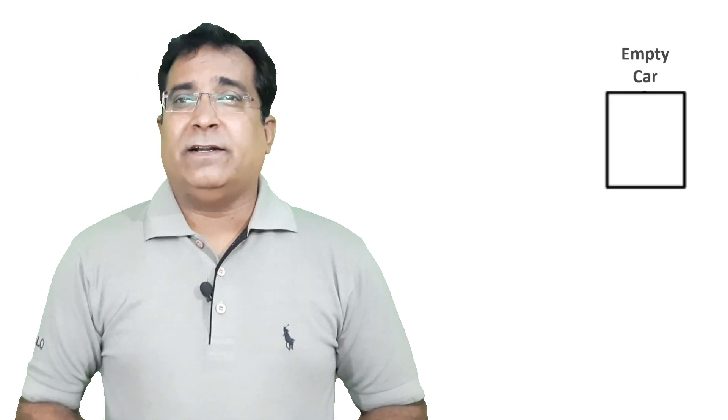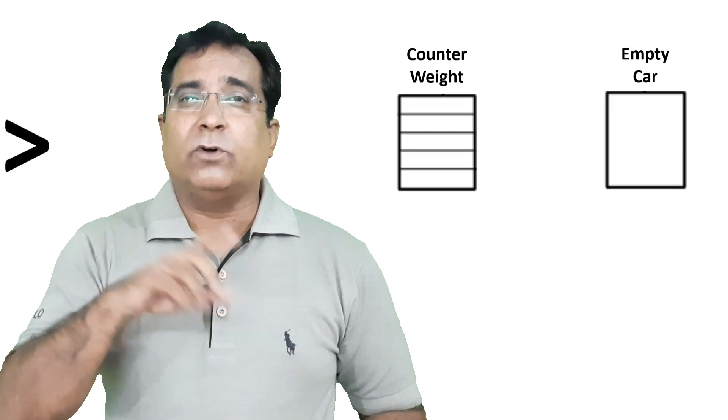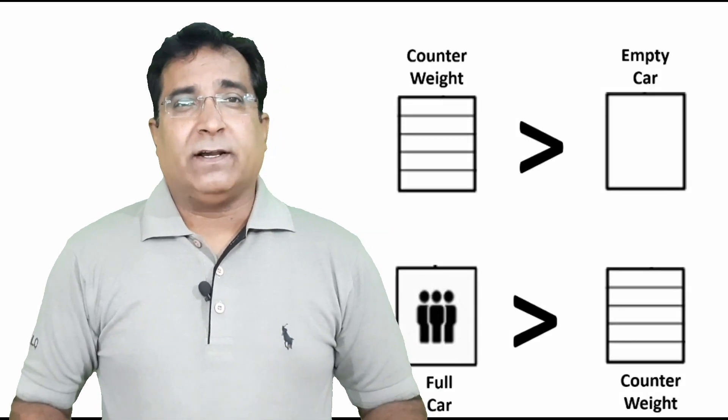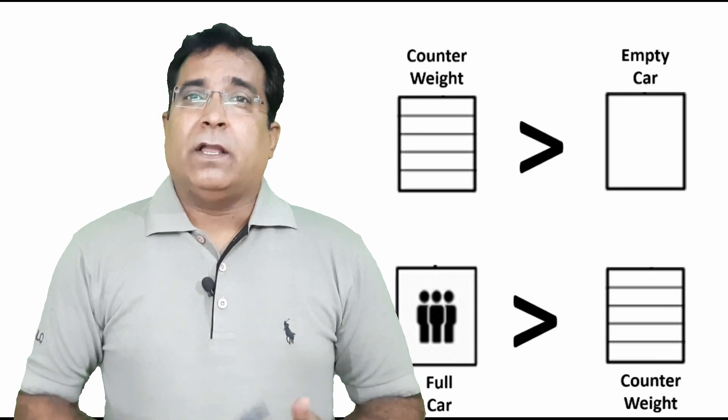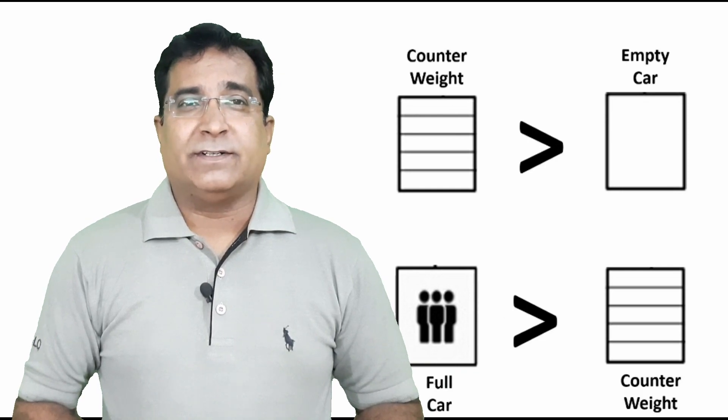Let us see how four quadrant operations are performed with elevator VFD. This elevator has two parts, a car that carries passengers and on the other side there is a counterweight which is tied to the car by a rope over motor run pulley. There are two conditions here: the counterweight is more than weight of empty car, and the car weight full of passengers is more than weight of counterweight.